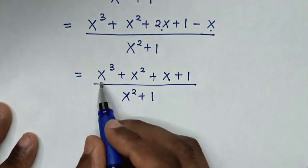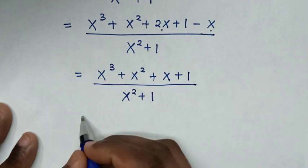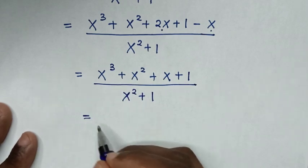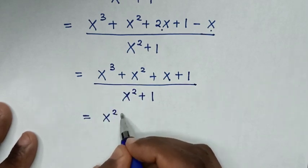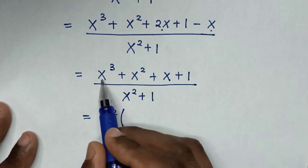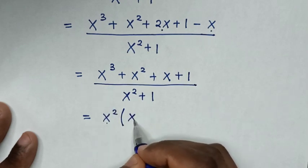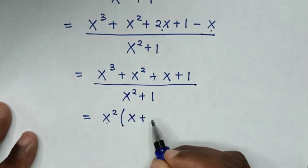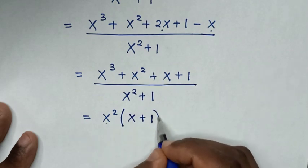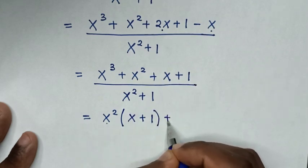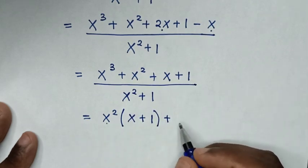Then in the next step, from here x square is common. So we take x square out of the bracket: x power 3 divided by x square is x, plus x square divided by x square is 1, bracket, then plus x plus 1.